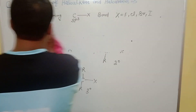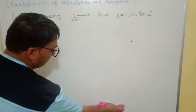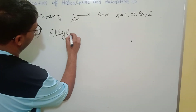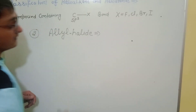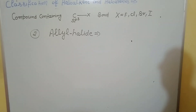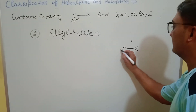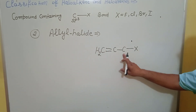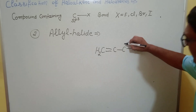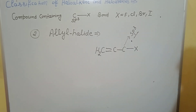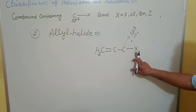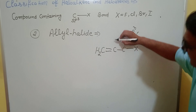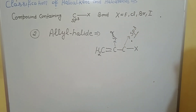The second classification is allylic halide. An allylic halide is formed when the carbon directly attached to the halogen is sp3 hybridized, but the adjacent carbon — directly attached to this sp3 carbon — is sp2 hybridized due to a carbon-carbon double bond. This is the allylic halide formation.